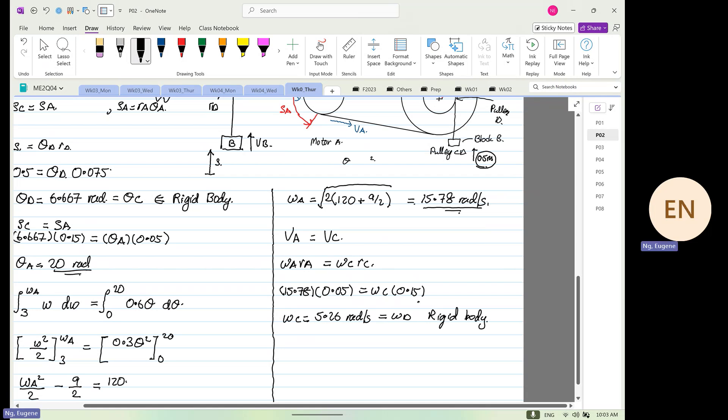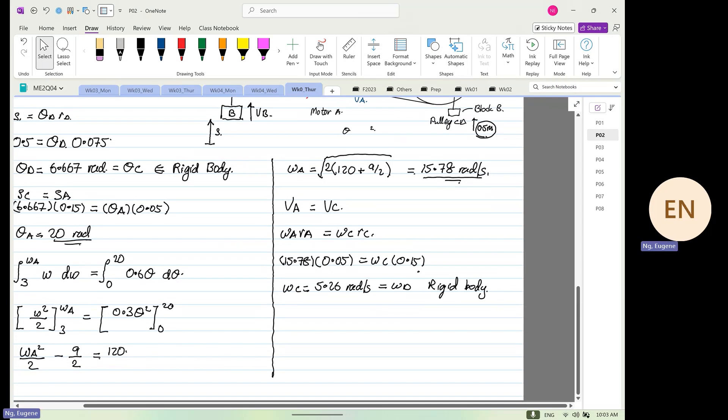So from here, lastly, we know that the velocity at d is equal to omega d times r_d. So this is equal to 5.26 multiply by r_d, which is equal to 0.075.